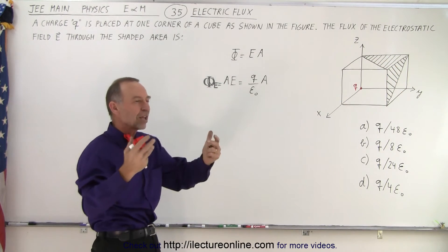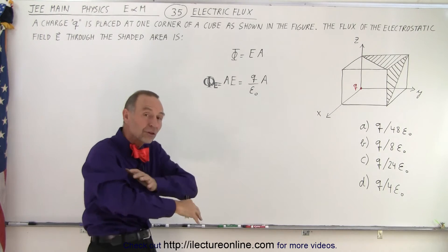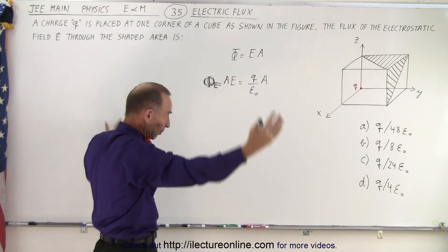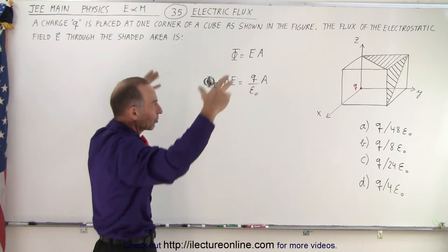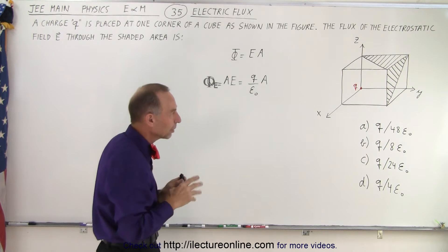So, we need to understand this. All of the flux goes in all directions, right? If we put a sphere around the charge, we can see the flux going to all directions. But if we put a cube around it...